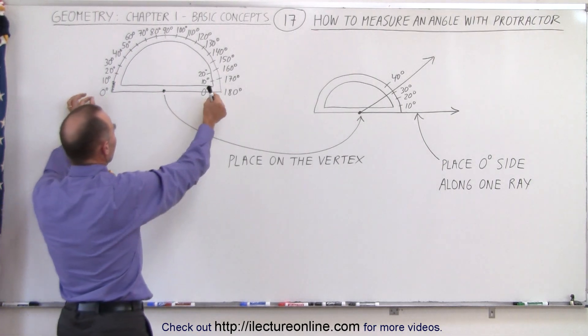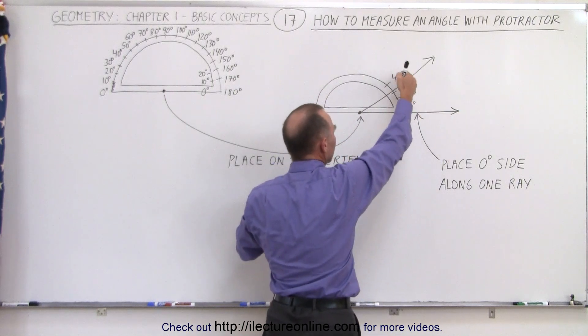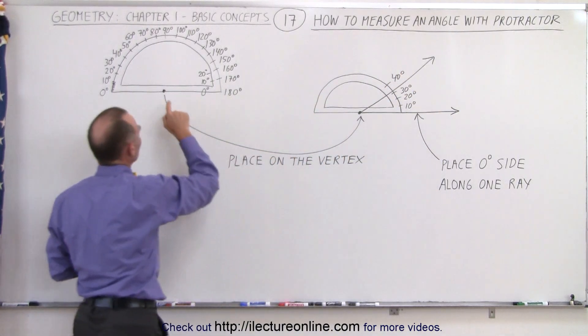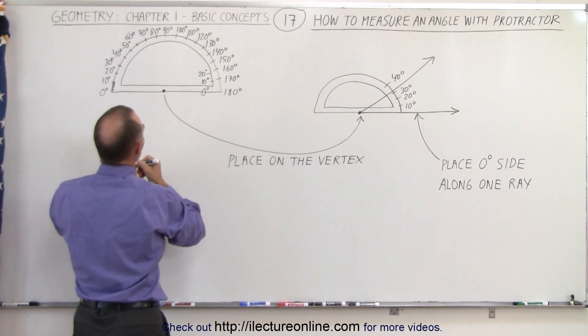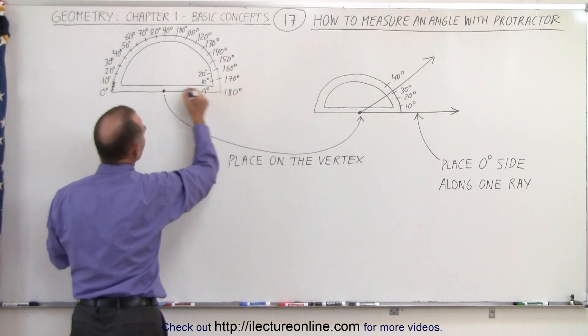So then you take your protractor, and you place it where your angle is. So here's an angle, here are the two rays, and notice there's a dot right here in the middle, that lines up from zero to zero degrees on one side, or from zero to 180 on one side.